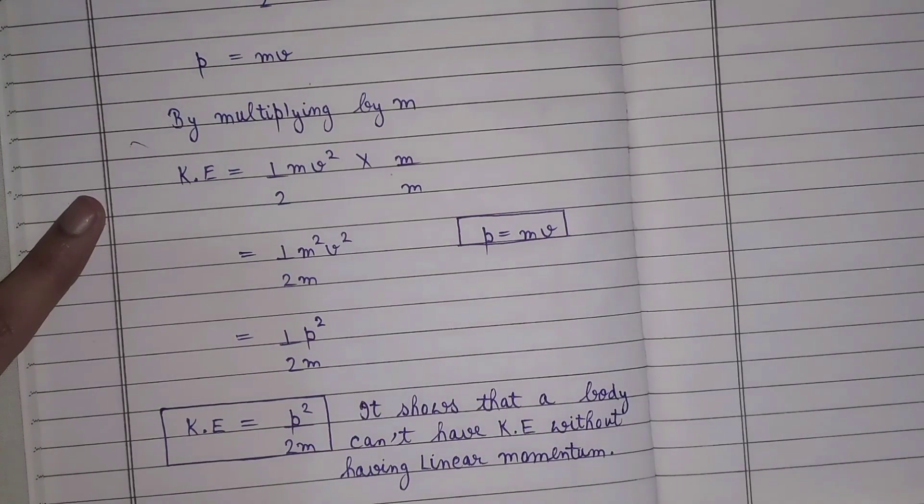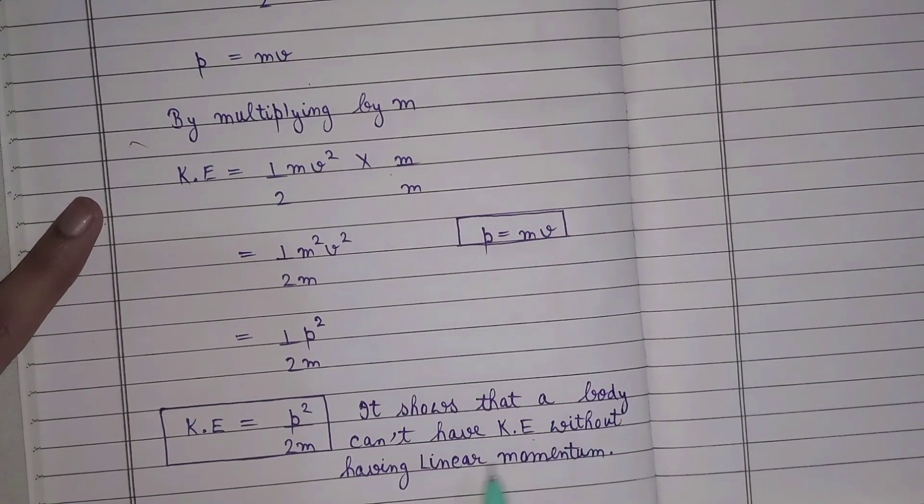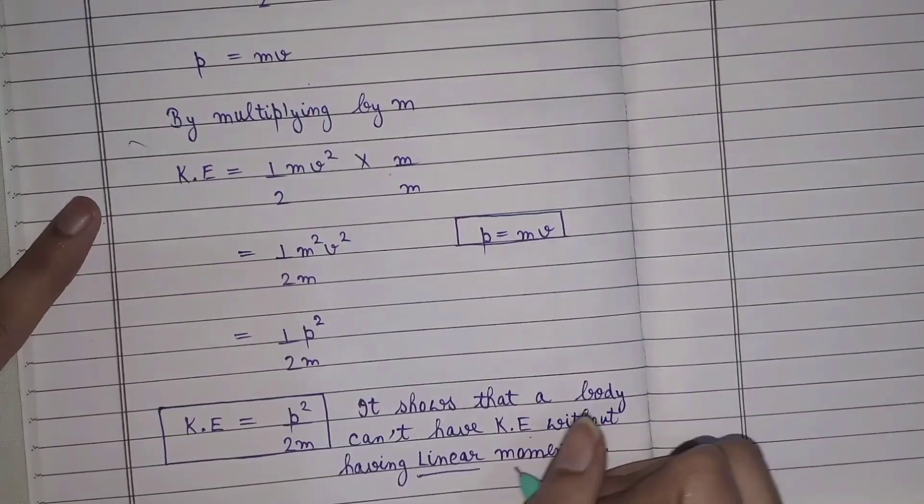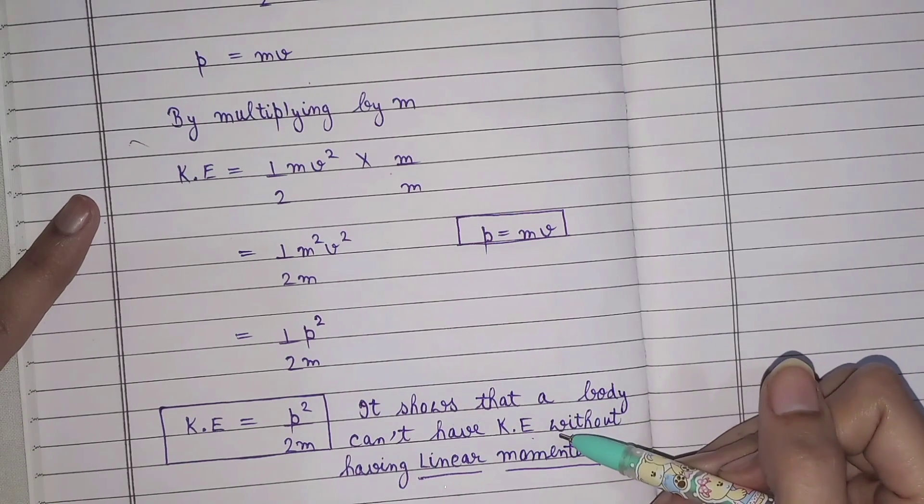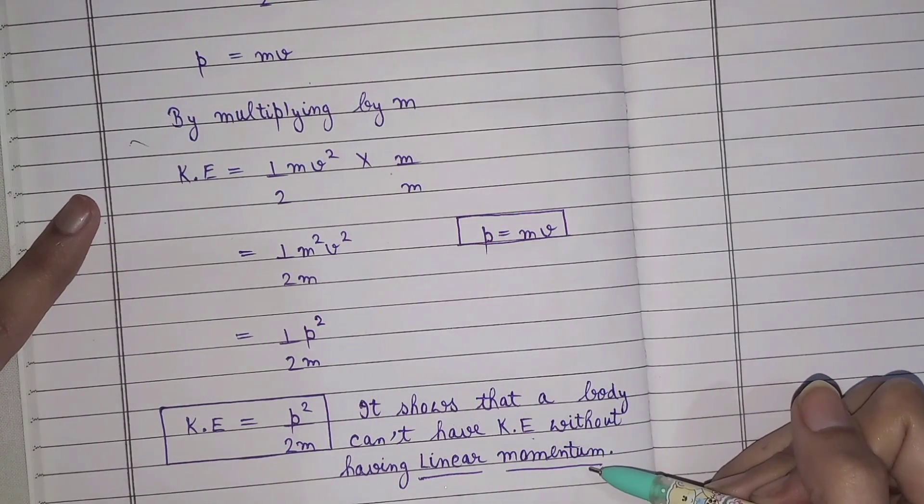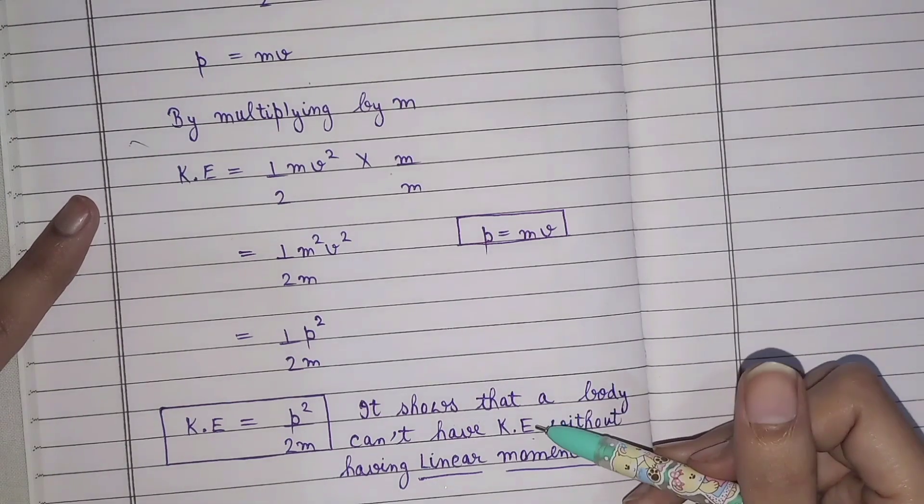Now this relation shows that a body cannot have kinetic energy without having linear momentum. Meaning that if any body has kinetic energy, then it will have linear momentum, and if any body has linear momentum, then it will have kinetic energy.